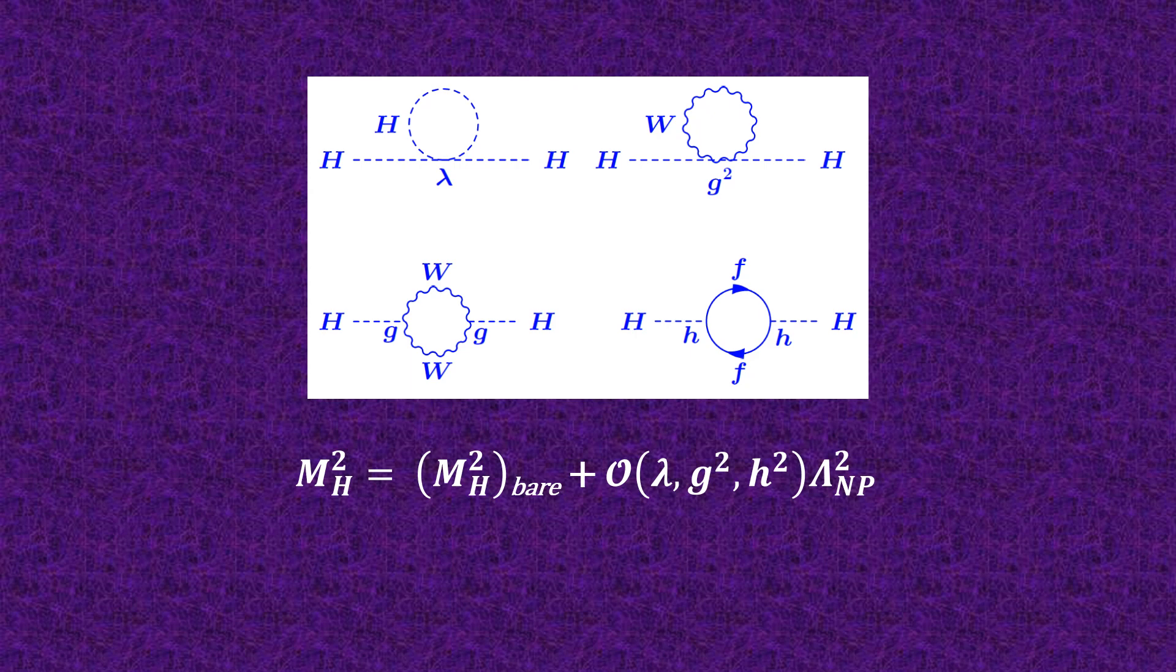Technically, this is not inconsistent. One can choose the bare Higgs mass square parameter so that it cancels the corrections to 33 decimal places. Another way of putting this is that the physics at low energies is incredibly sensitive to the physics at lambda np. The need for this incredible fine-tuning of the bare Higgs mass square is known as the Higgs hierarchy problem.